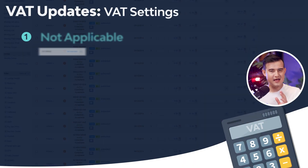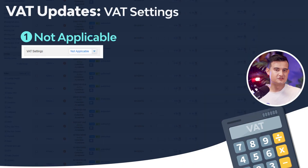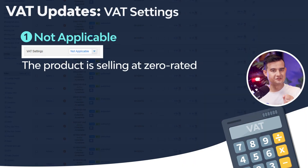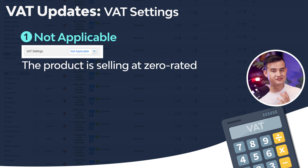The first setting is not applicable. This means that the product is selling at zero-rated. When not applicable is selected with no number input, the system will default this at zero percent.